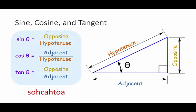Now sine, cosine, and tangent. These are the definitions of sine, cosine, and tangent. Hit pause. Copy this down. This is something you must have.